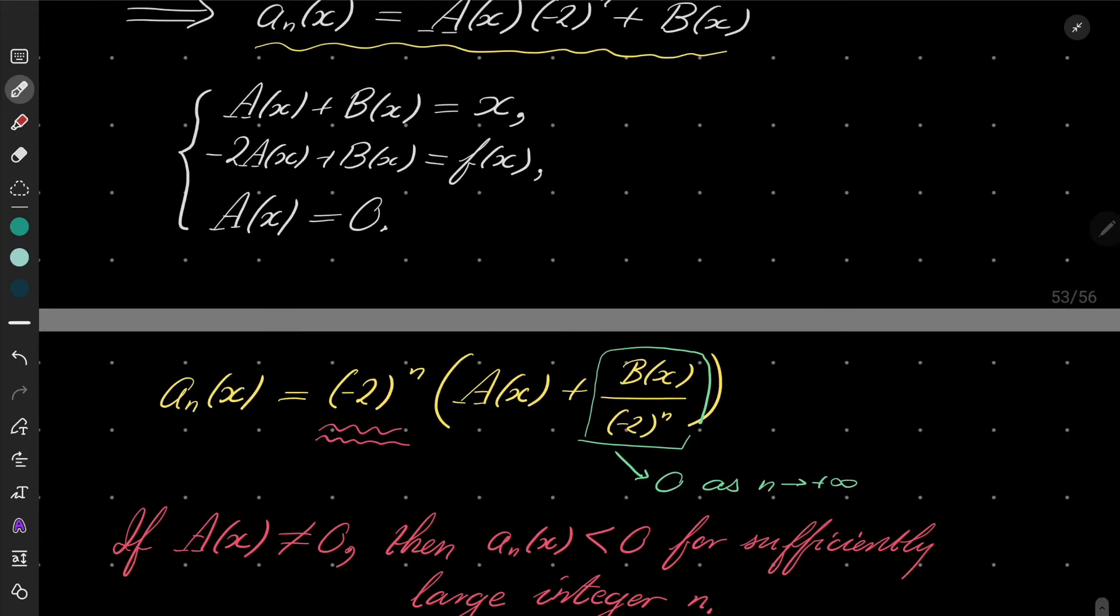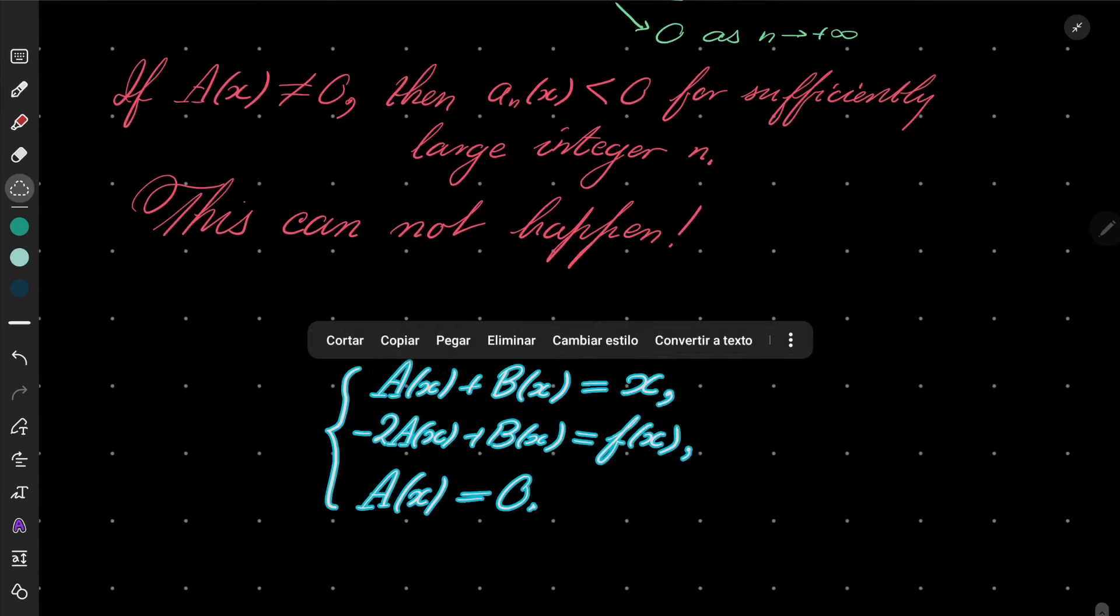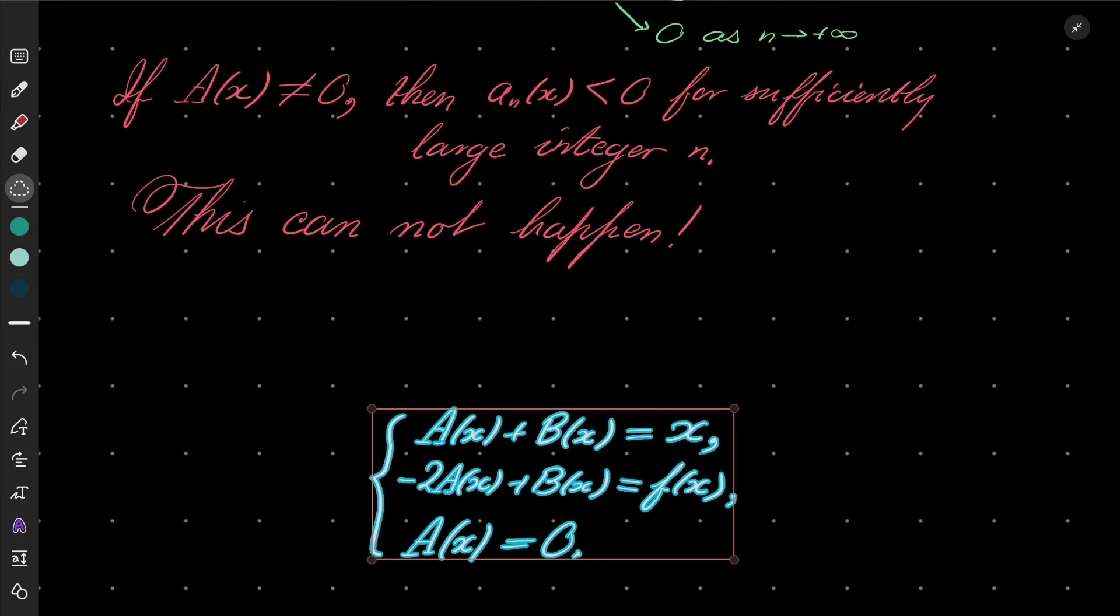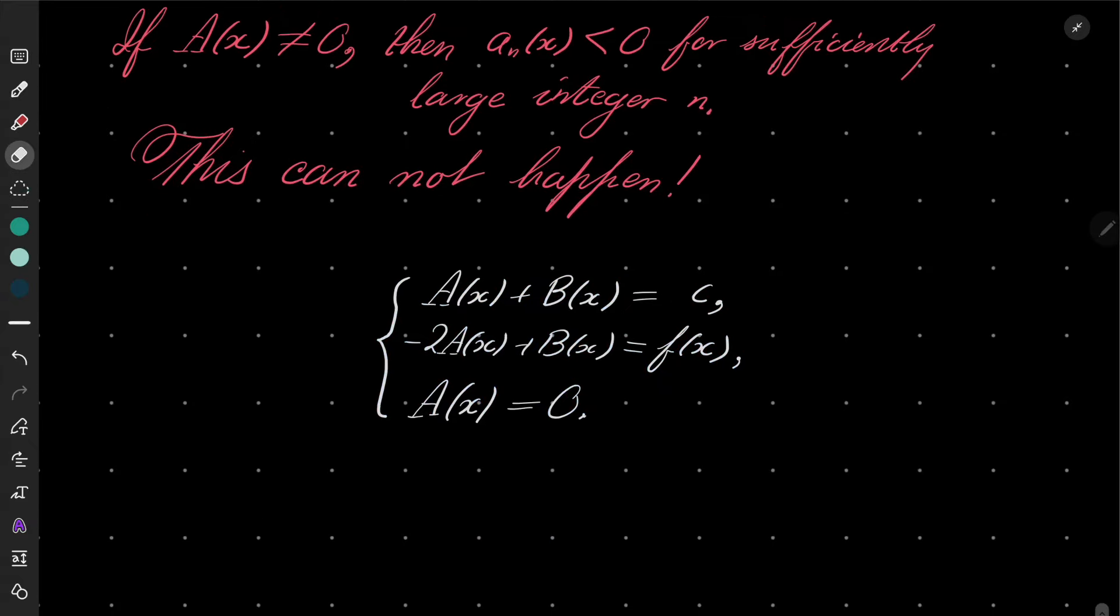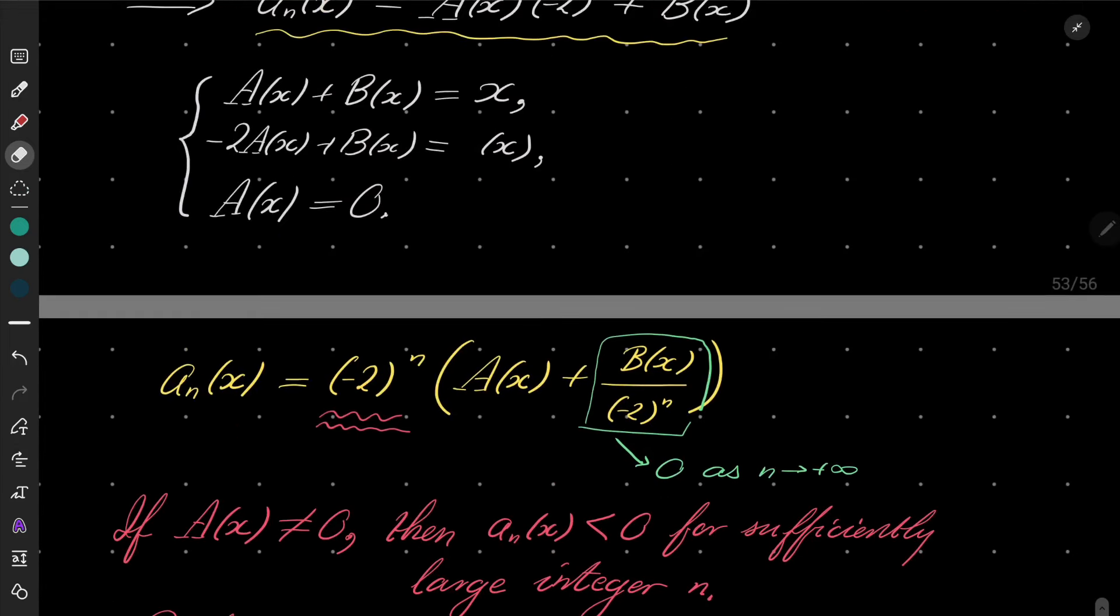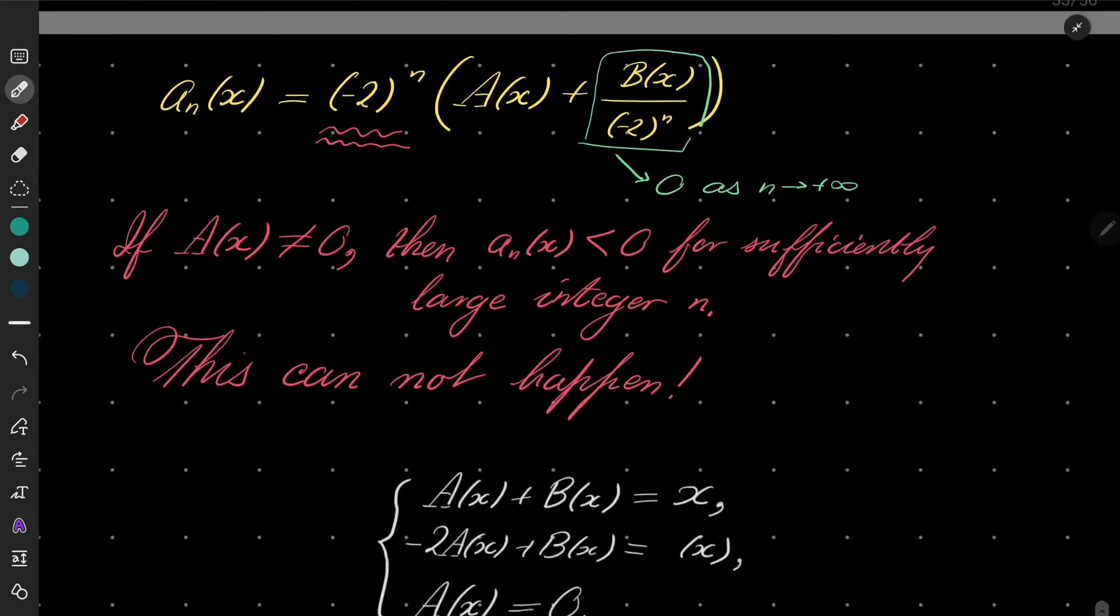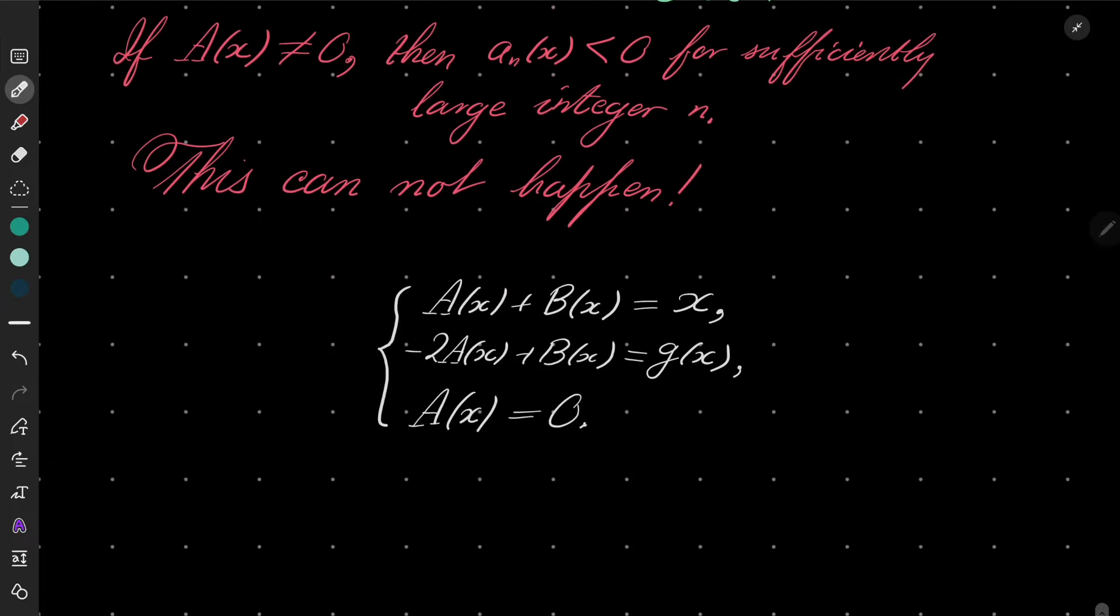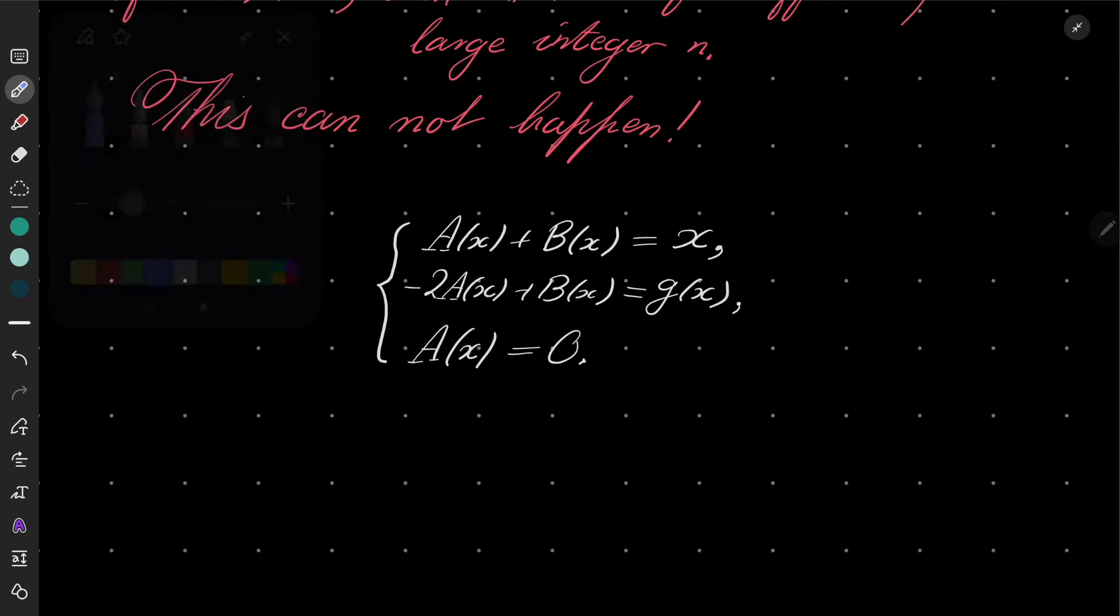This cannot happen, which means that a(x) must equal zero. In fact, we have our third and last equation. And now I will take this system of equations and do something interesting. There was a typo—not f(x) but here should be g(x), sorry for that.